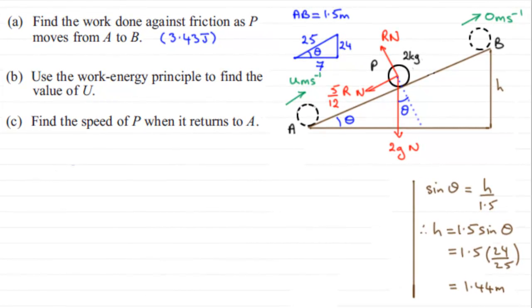Hi. Now, in the last part, part C, we've got to find the speed of P when it returns to A. Remember, it was projected up initially with a speed of U meters per second, went up to B, and now it's going to start to come back down to A. So we've got to find that speed of P when it returns to A.